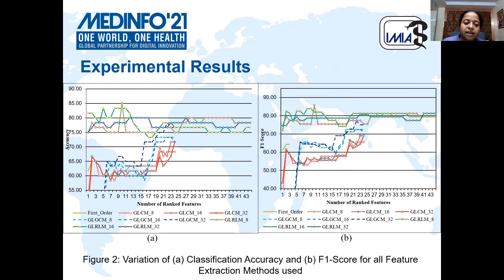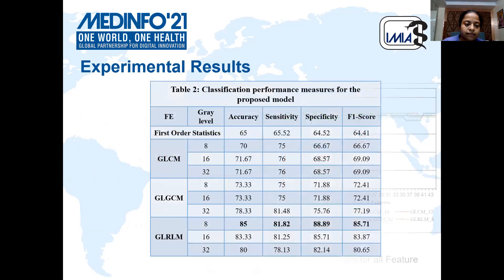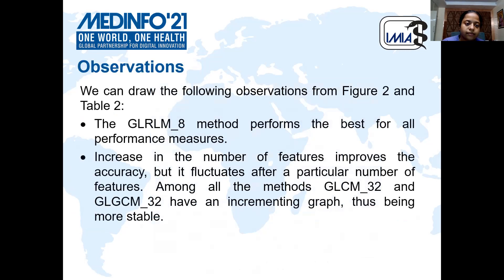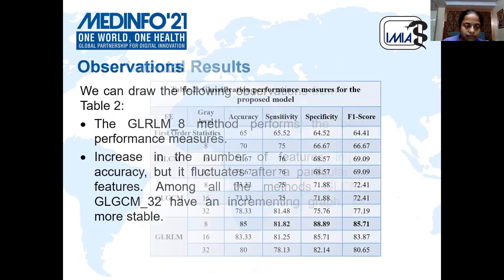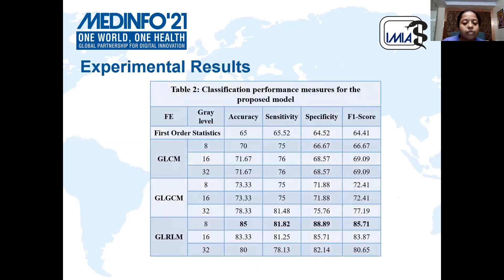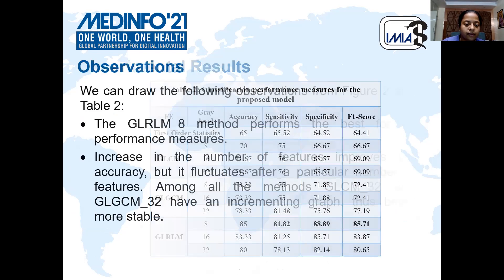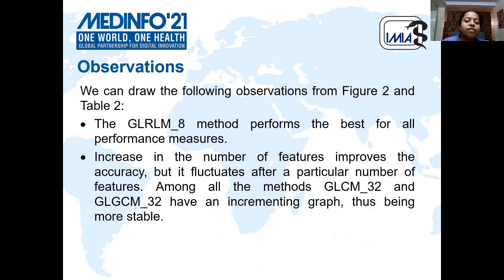These are the experimental results. From these results, we can draw the conclusion that the GLRLM method performs the best for all the performance measures, as shown in bold. Increasing the number of features improves the performance, but it fluctuates after a particular number of features. Among all the methods, GLGCM-32 and GLCM-32 have an increasing graph, being mostly stable.